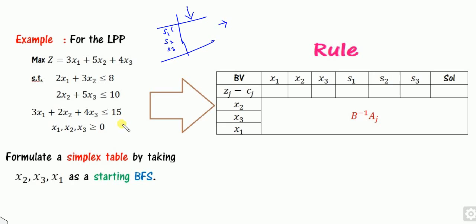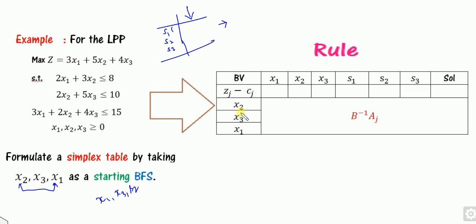Now in this task, we will see how to formulate the simplex table by taking, instead of S1, S2, S3 as starting variables, we consider S2, S3, S1 as the starting BFS, or any other combinations. For example, you can consider S1, S3 instead of S2, and so on. Your task is to write this table directly. The simple rule is B inverse of AJ.